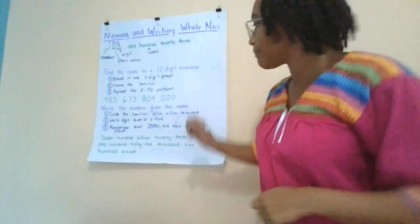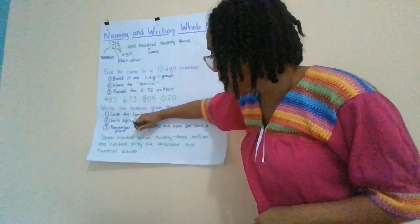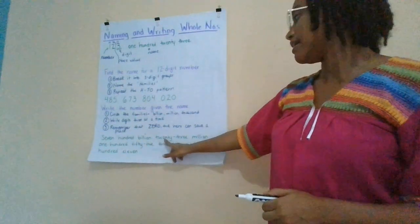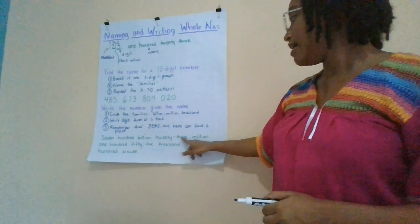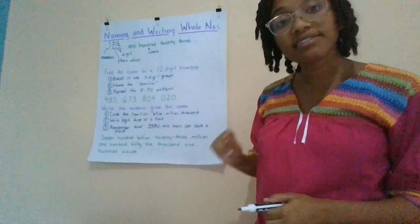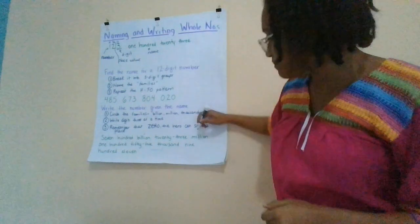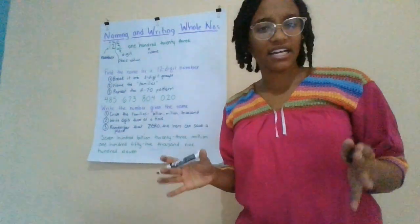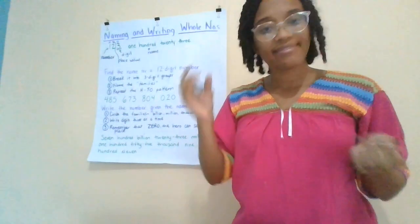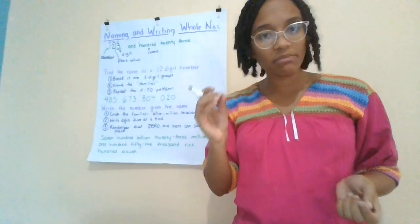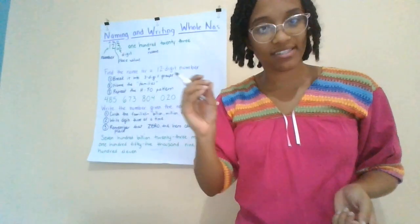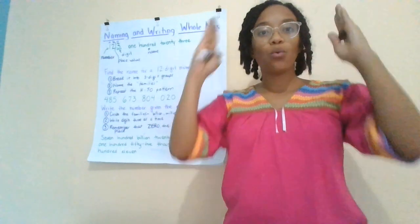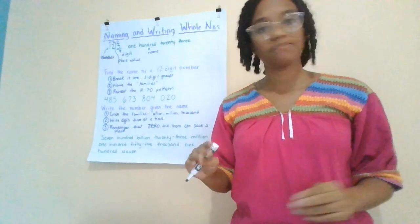Next, I'm reading through and I find million — that's the next family name, so I'll put a dot here. The reason I'm putting a dot here is I want to remind myself that this isn't going to be one of the digits that I write. In fact, it's helping me realize when I've made it to three different digits.